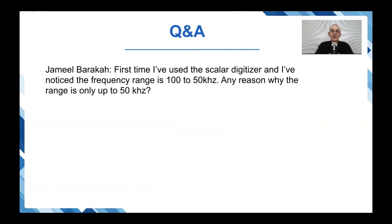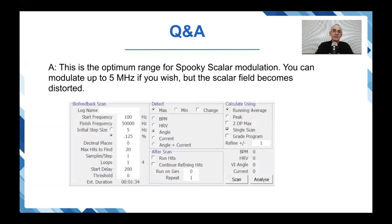It's the first time he's used the scalar digitizer and he's noticed that the frequency range in the preset is 100 Hz to 50 kilohertz. Is there any reason why the range is only up to 50 kilohertz? Well, that is actually the optimum range for the scalar modulation. You can modulate up to five megahertz if you wish, but the scalar field becomes distorted — it's distorted because more of the scalar field is information rather than field itself.